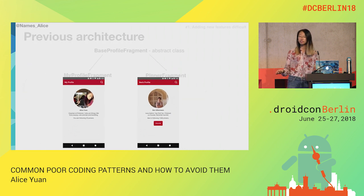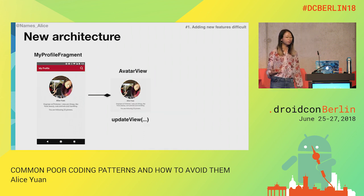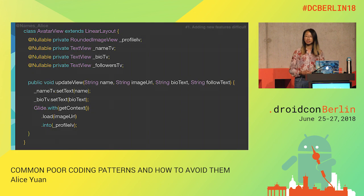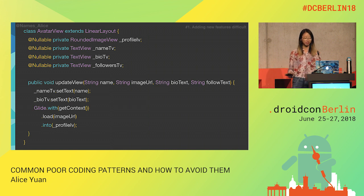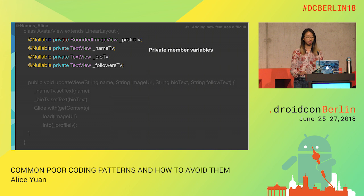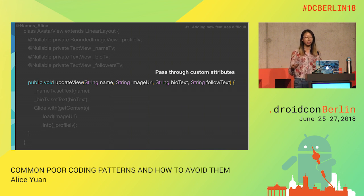Our previous architecture looks something like this. And our new architecture is just that we have my profile, which contains the avatar view, and the pinner fragment that also contains the avatar view. This is what the avatar view now looks like, and we made some great improvements. We have private member variables, so it can only be changed within the avatar class. And secondly, we're actually passing through custom parameters, so when we want to update that follow text, we're not updating it through the class itself but actually through the method.